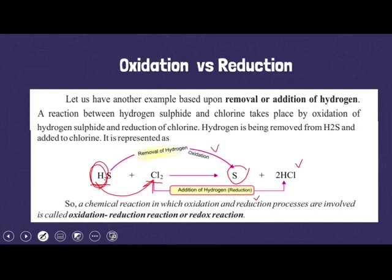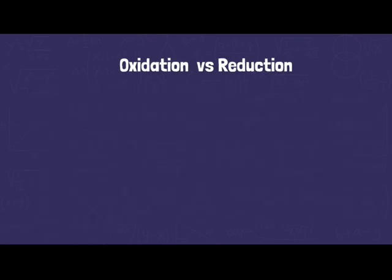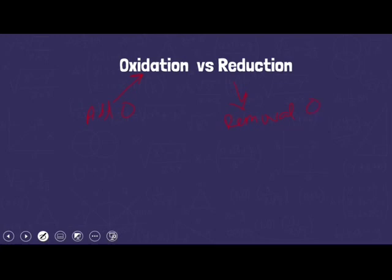So oxidation and reduction are both occurring continuously together in the same reaction. A chemical reaction in which both oxidation and reduction processes are involved is called an oxidation-reduction reaction. To summarize: addition of oxygen to any element or compound is called oxidation, and removal of oxygen is called reduction. Similarly, removal of hydrogen is called oxidation, and addition of hydrogen to any element or compound is called reduction.